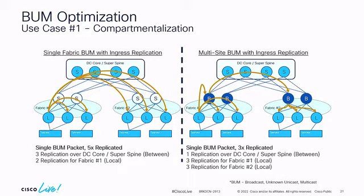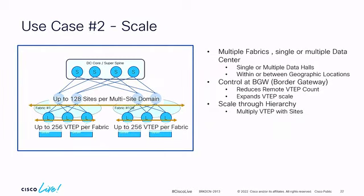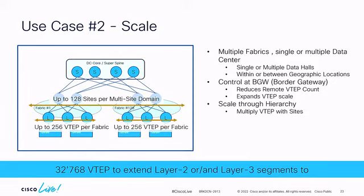With multi-site, we replicate within the site from leaf to all neighbor leaves. The border gateway is also a neighbor leaf — we terminate, create one copy, send it across, then fan out on the border gateway again for leaves on the remote side. The interconnect between fabrics is massively optimized. Add storm control, add ARP suppression, and you've optimized layer 2 significantly while keeping the same subnet communication. For scale: 32,768 VTEPs — 256 switches per fabric multiplied by 128 fabrics.